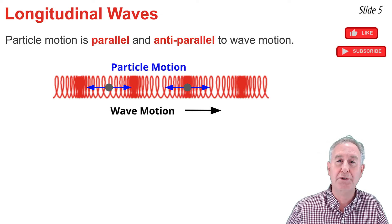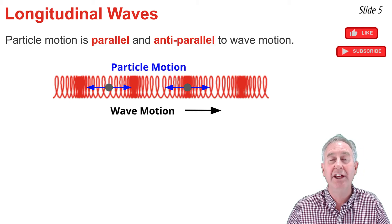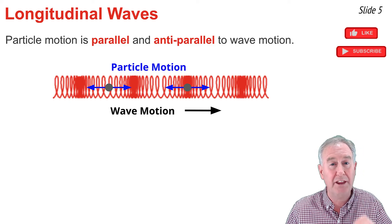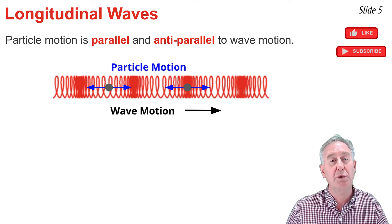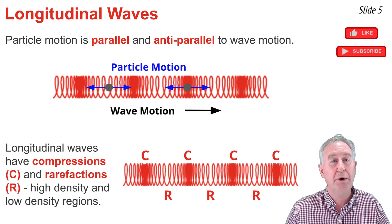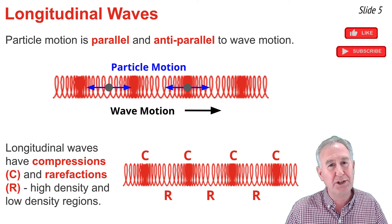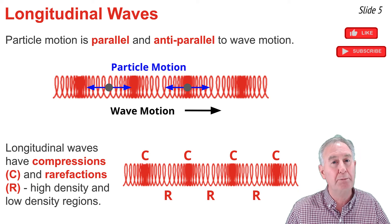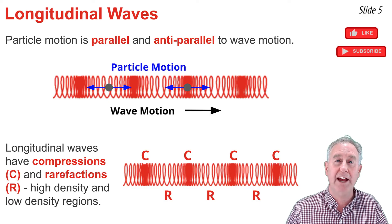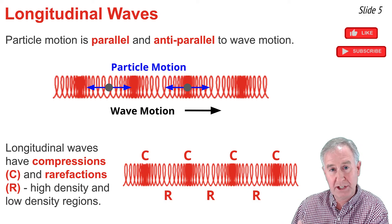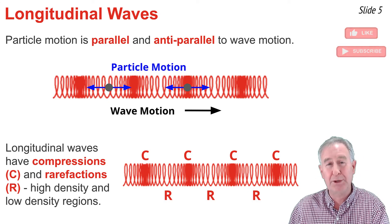There's no crests and troughs in this diagram. Instead, there's points where the coils are compressed together very tightly and other areas where they're spread apart very tightly. We refer to these points of maximum coil density as compressions and the points of minimum coil density as the rarefactions. They're noted as the C and the R in the diagram you see here.